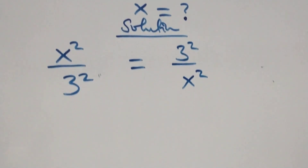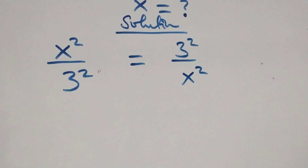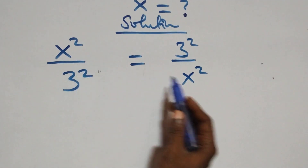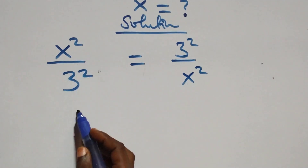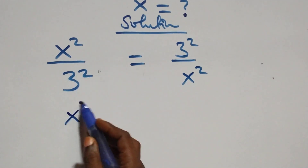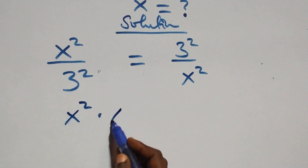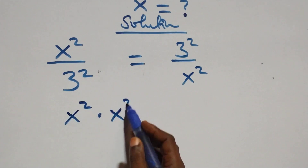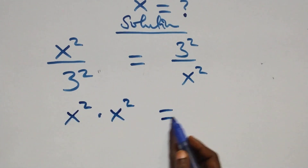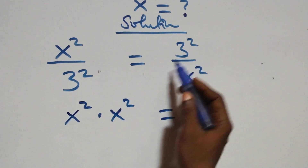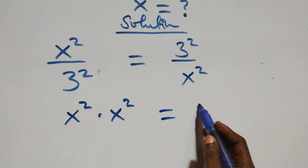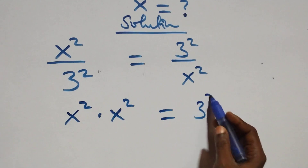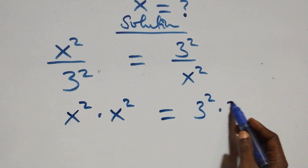The next step, we cross multiply: x squared times x squared equals to also here we have 3 squared times 3 squared.